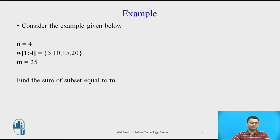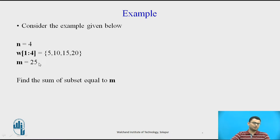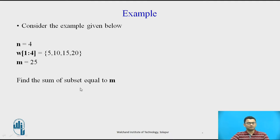Consider a simple example. We have four positive distinct weights: 5, 10, 15, and 20, and m — that is, the target sum we have to find — is equal to 25. We have to find the sum of subsets which is equal to m.